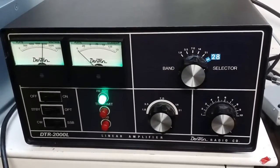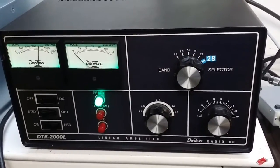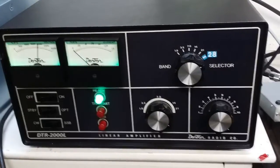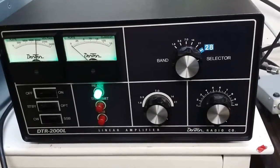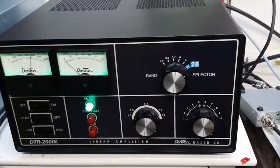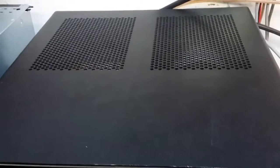Hello again everyone, TruxCBsales here with a performance report for my friend Paul in Michigan on his Dentron DTR-2000L. It features a 3CX 1500A7 tube, nice little unit.